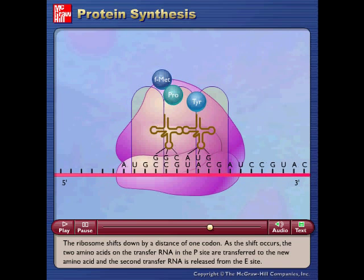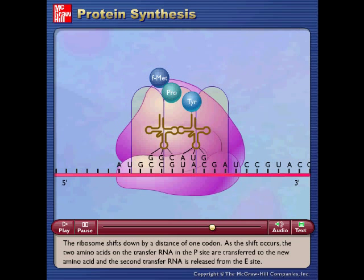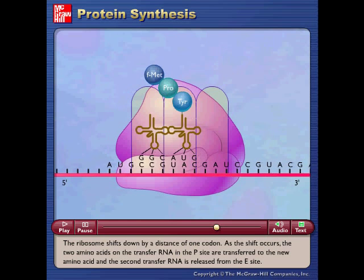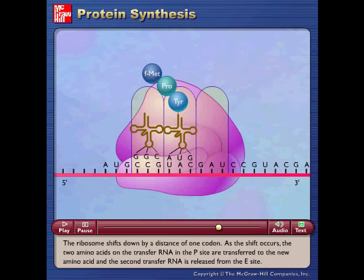As the shift occurs, the two amino acids on the transfer RNA in the P-site are transferred to the new amino acid, and the second transfer RNA is released from the E-site.